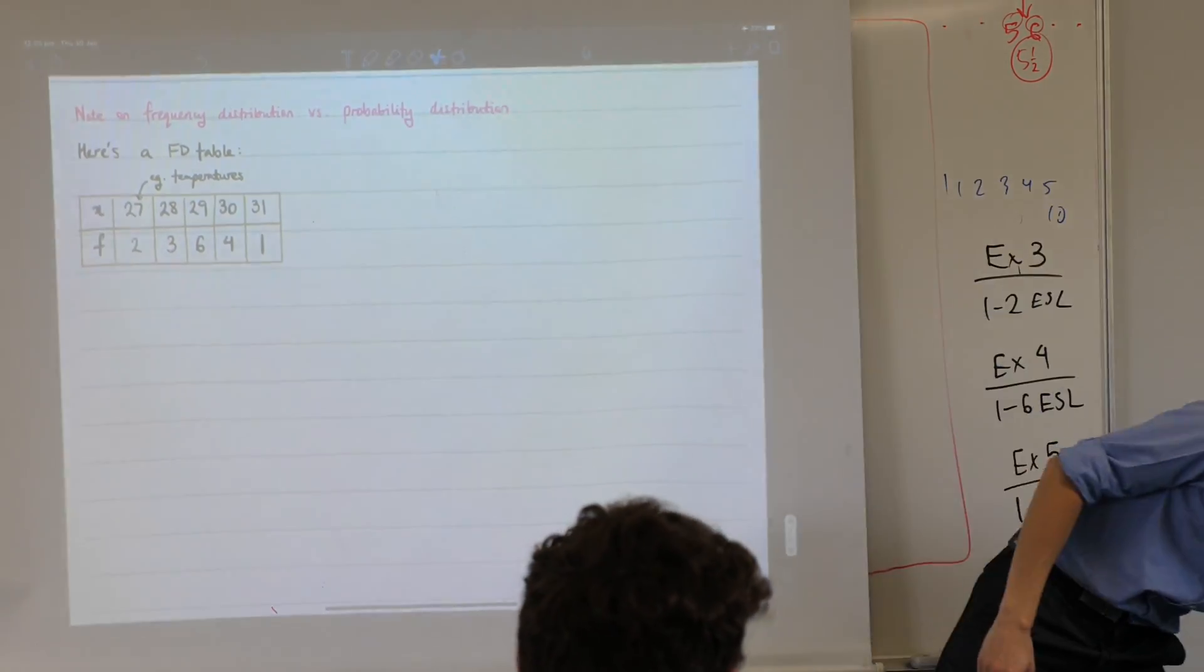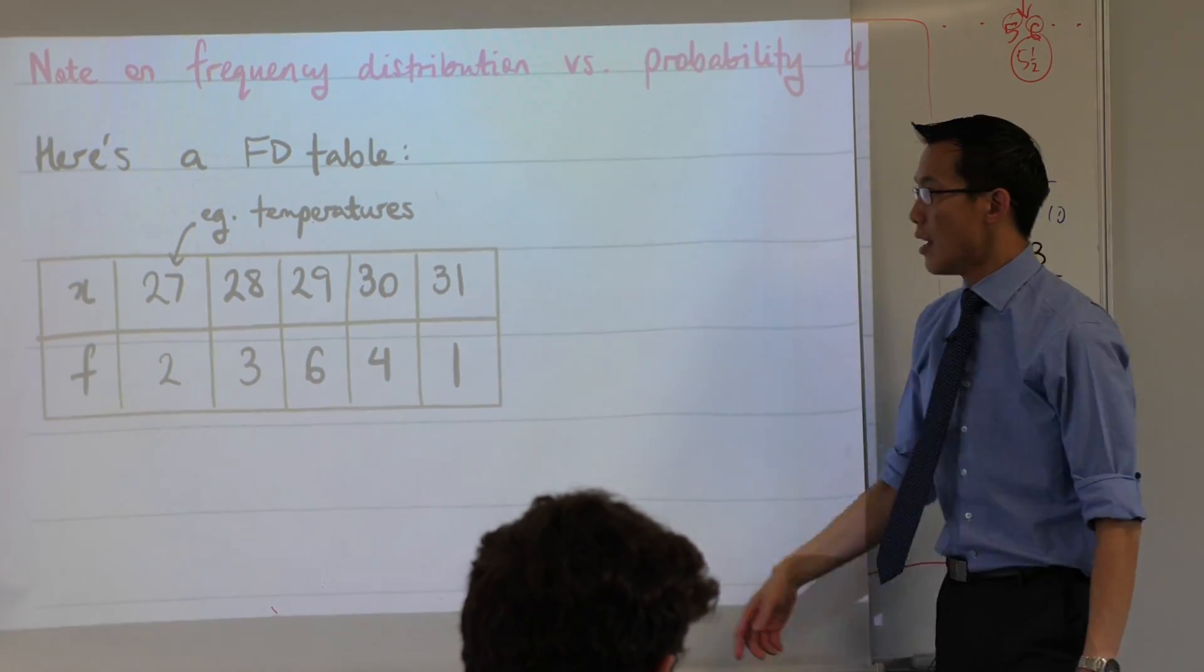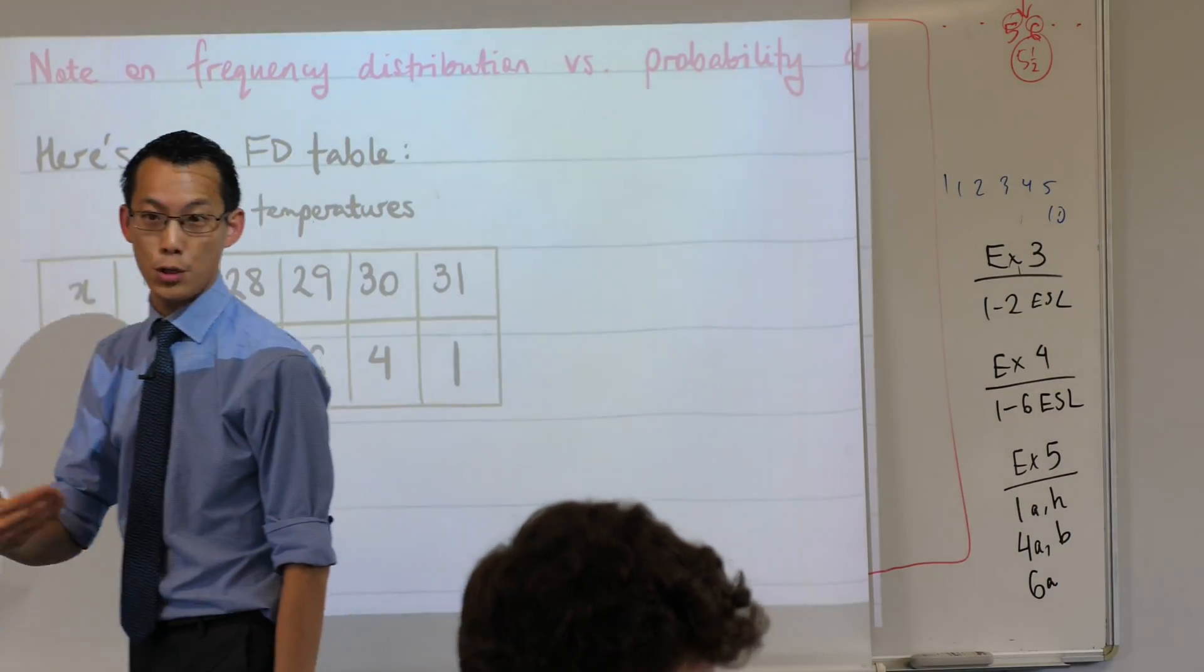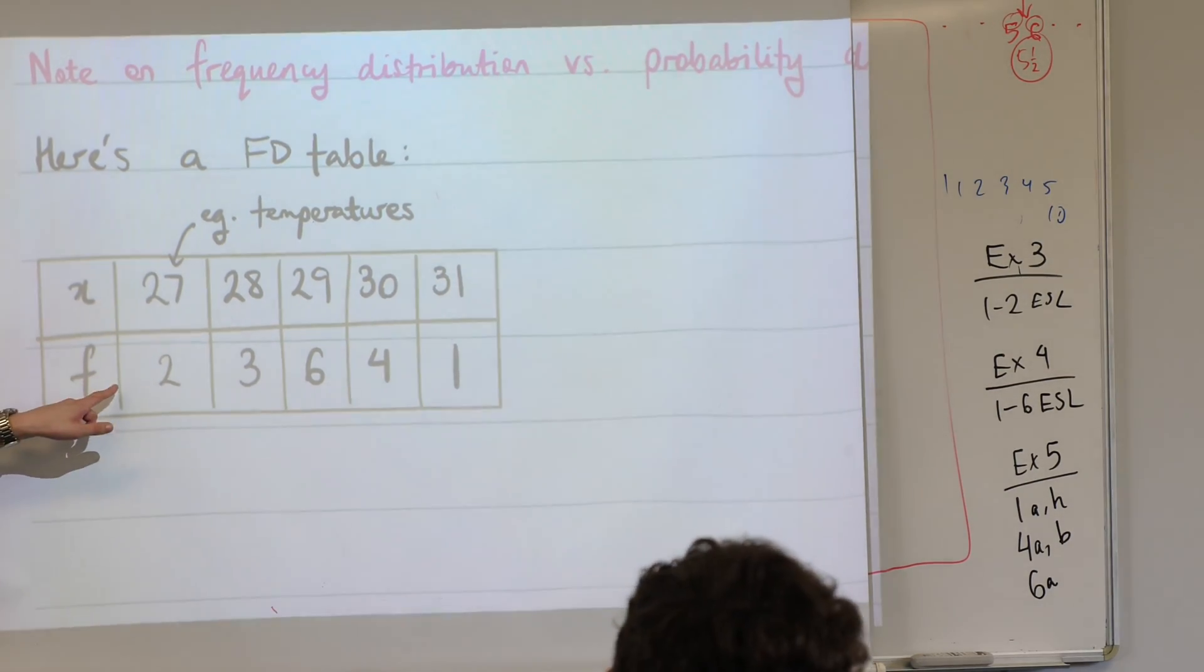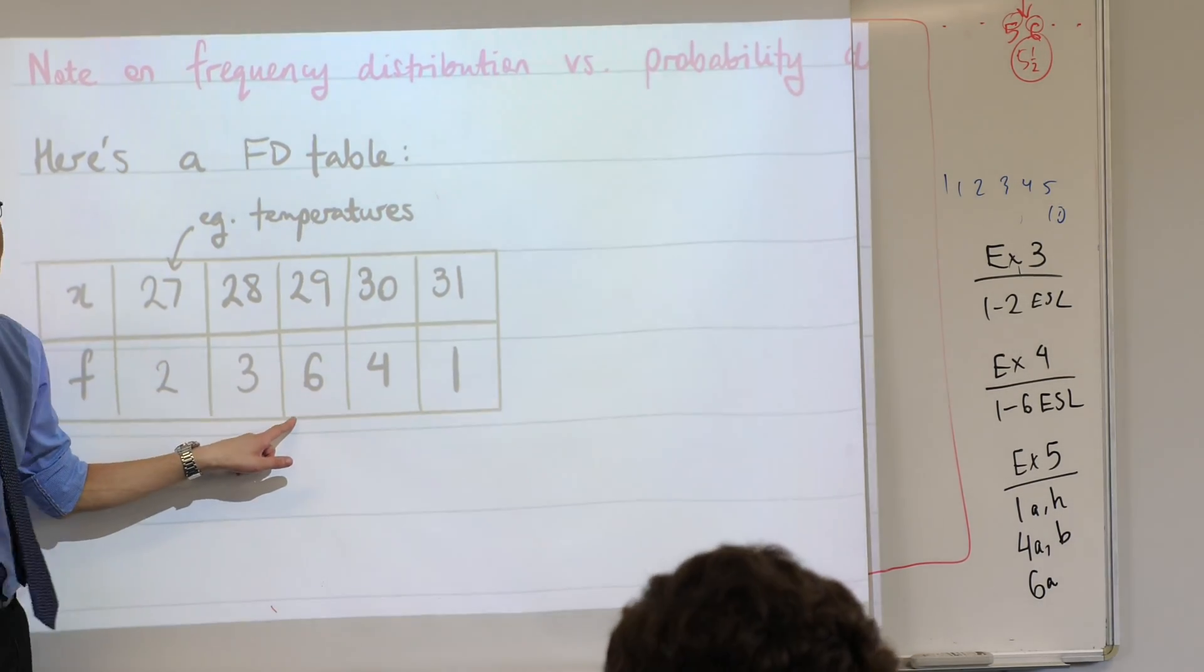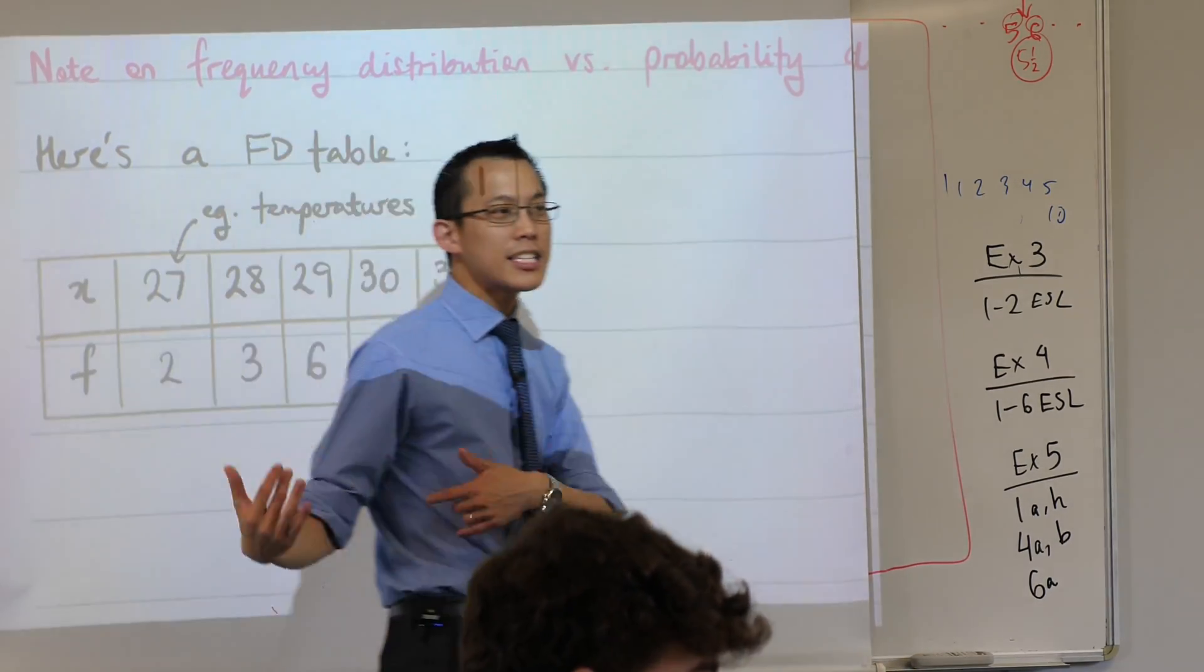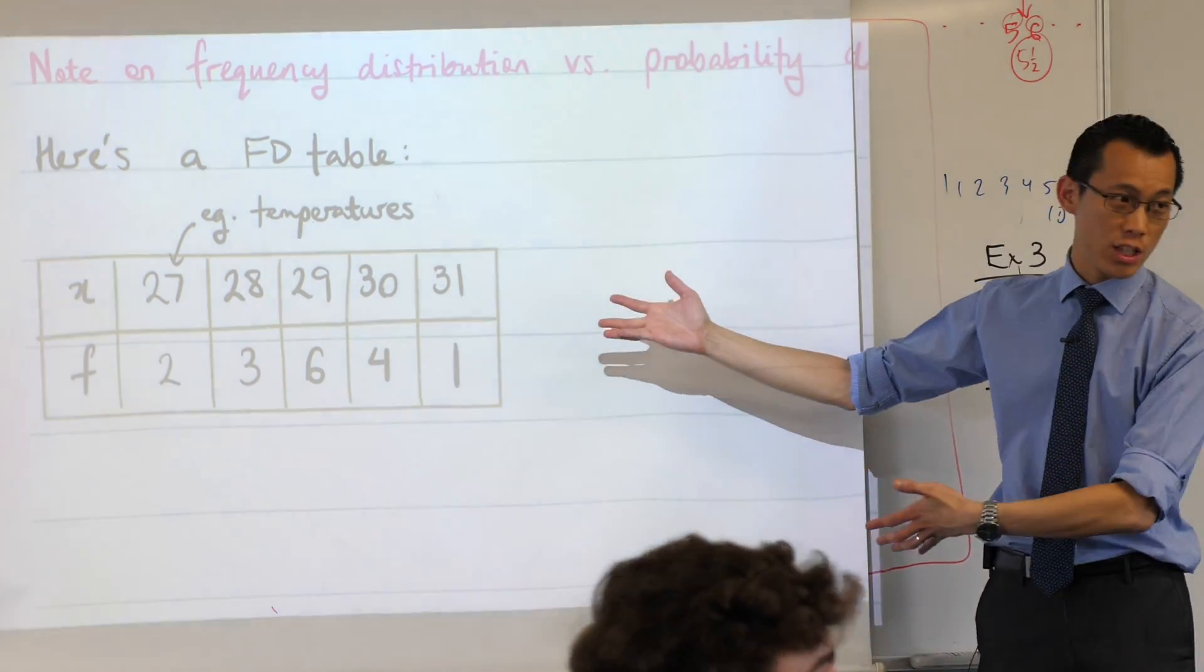Now you've been looking at tables like this in the questions you're doing. This is what we call a frequency distribution table because it tells you the frequency and how it's distributed. They nailed it. So this is an example of a frequency distribution table.